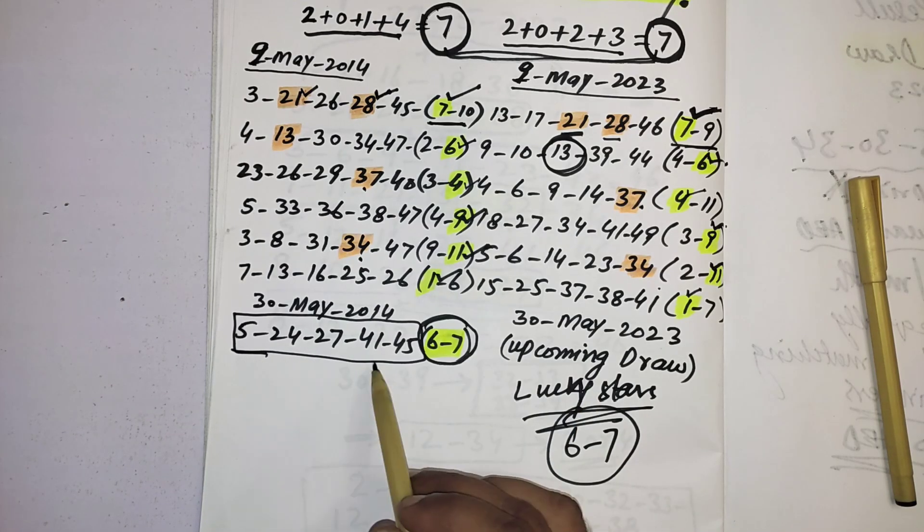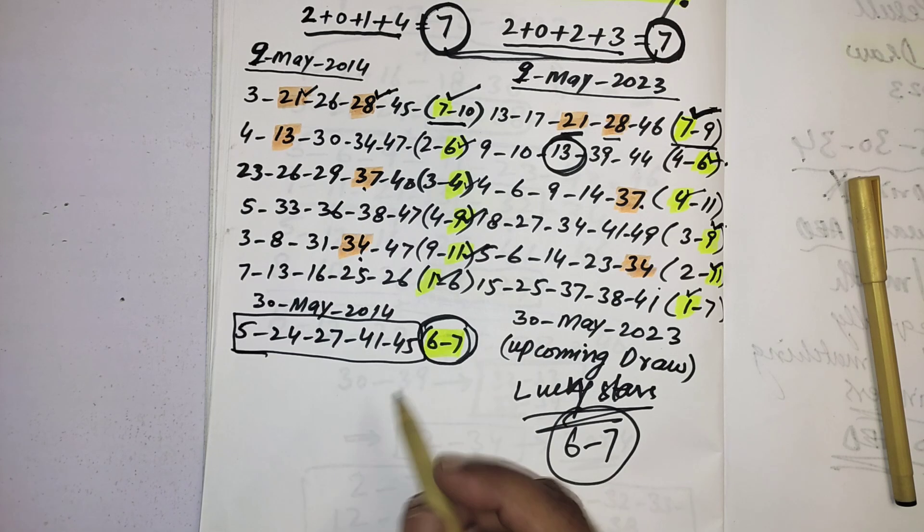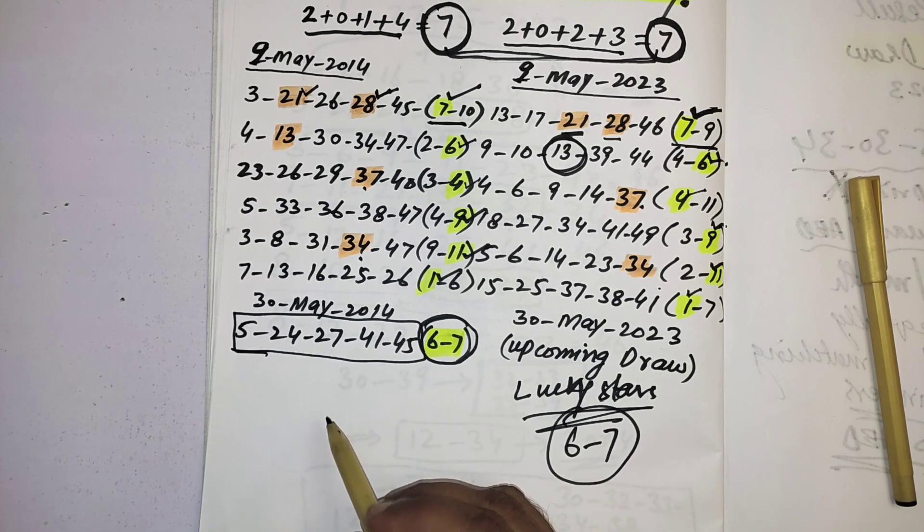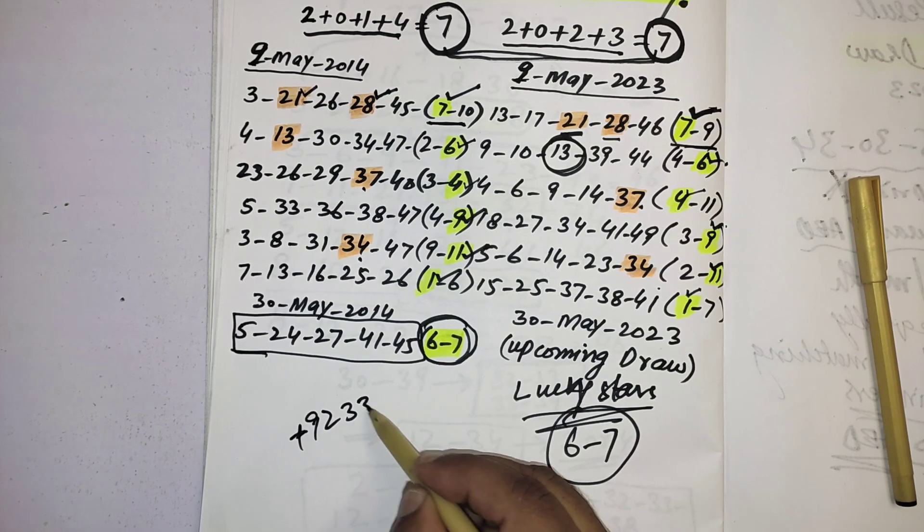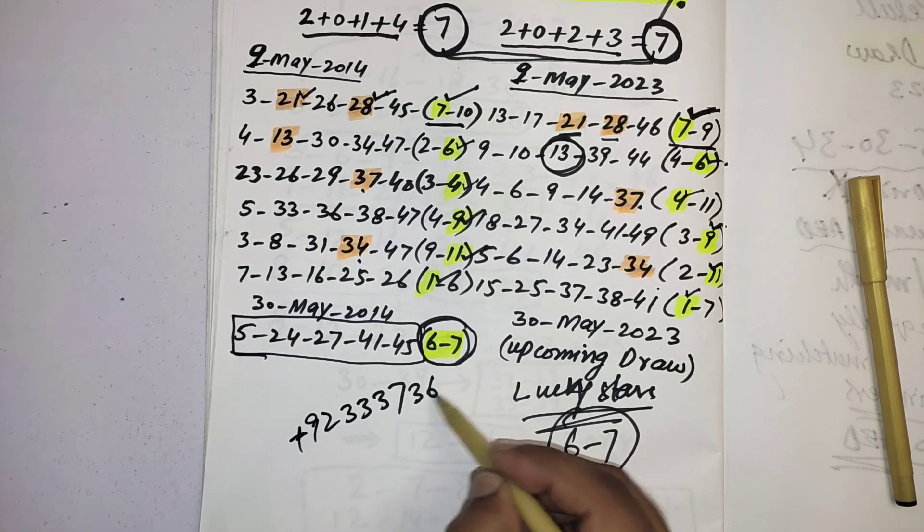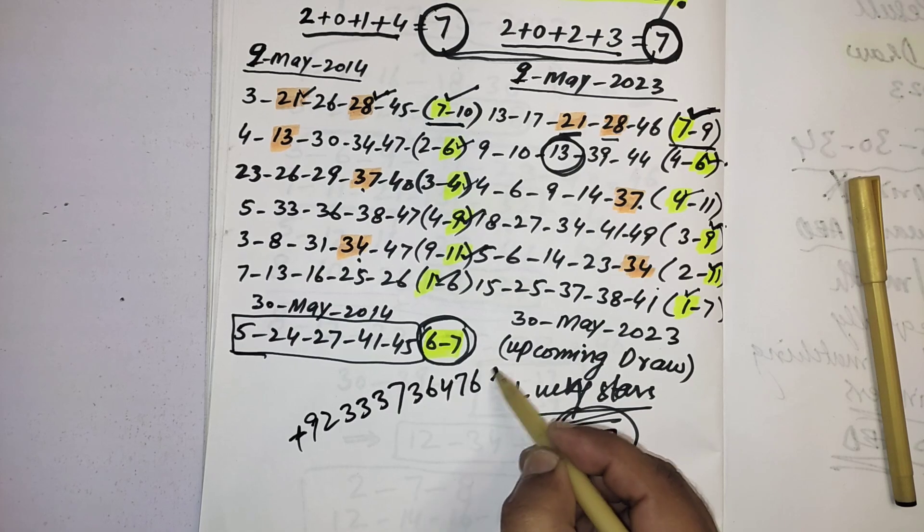Or if you don't have time to make the numbers, you can also get my membership. This is my WhatsApp number. You can contact only for membership. I will give you my services and try to make you a jackpot winner.